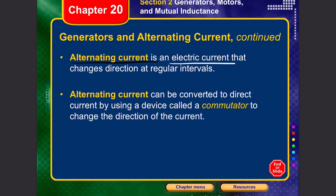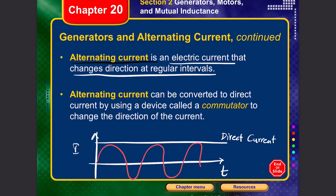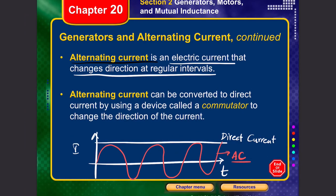Alternating current is an electrical current that changes direction at regular intervals, alternating between positive and negative values. In an AC generator we use slip rings and brushes, while in a DC generator we use a commutator. The commutator ensures cycles are always in the same direction, so the average value produces a direct current.